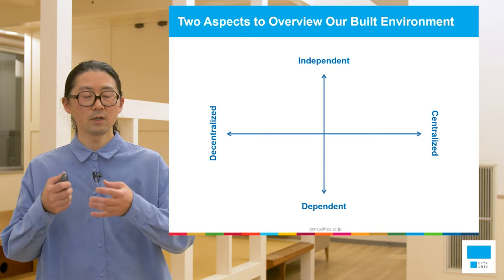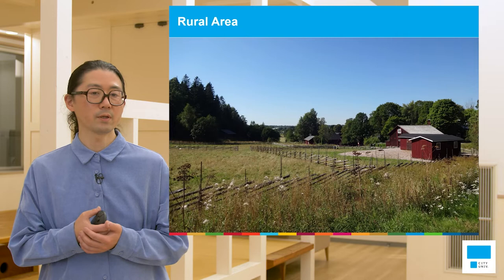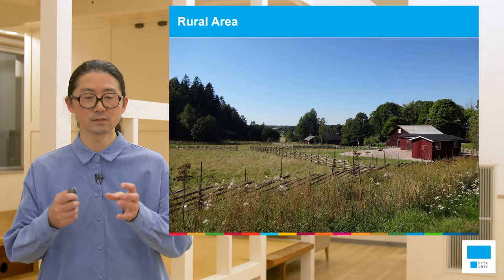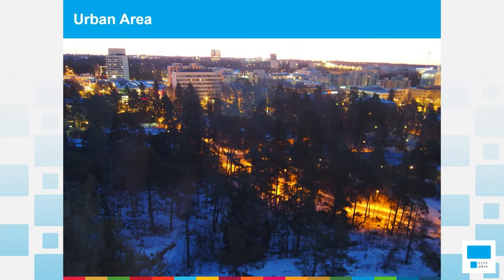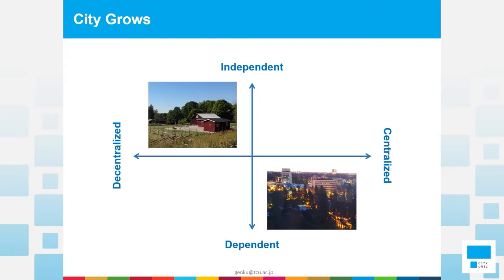In the past, in the rural area, the built environment was designed like this — very distributed, with very small houses located part by part, and daily life managed by themselves. Little by little, cities grew and urban areas developed city infrastructures like lighting systems and transportation systems. Building density got higher and we could enjoy every activity in the town. With this diagram, we can show that every city is getting more centralized and our daily life is depending on that infrastructure.